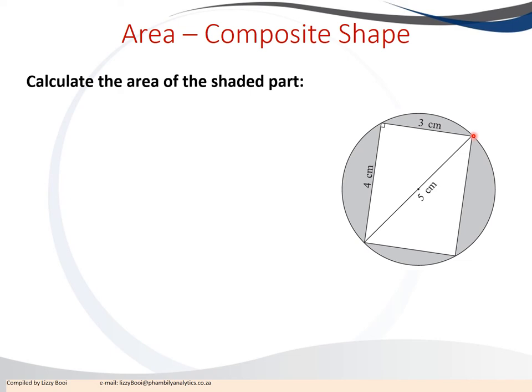To calculate only the shaded area, we need to calculate the area of the circle and the area of the rectangle, then subtract the rectangle from the circle so we're left with only the shaded area.